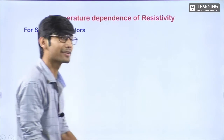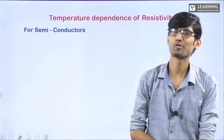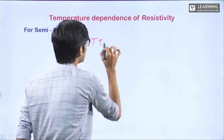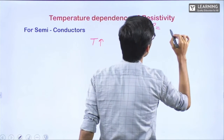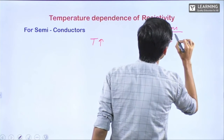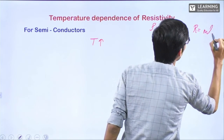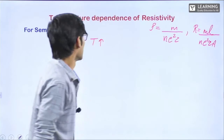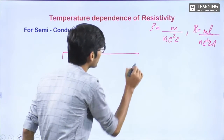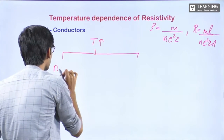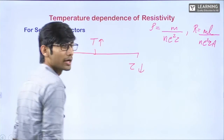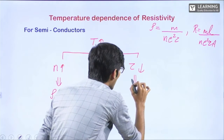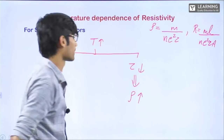Next, for semiconductors. Again, let's see what will happen. The formulas are: ρ = M/(NE²τ) and R = ML/(NE²τA). If the temperature is increasing, again two things are happening: N is increasing, which means ρ will decrease; and τ is decreasing, which means ρ will increase. Now which effect will be significant depends on the kind of material we are using — this time it is semiconductors.